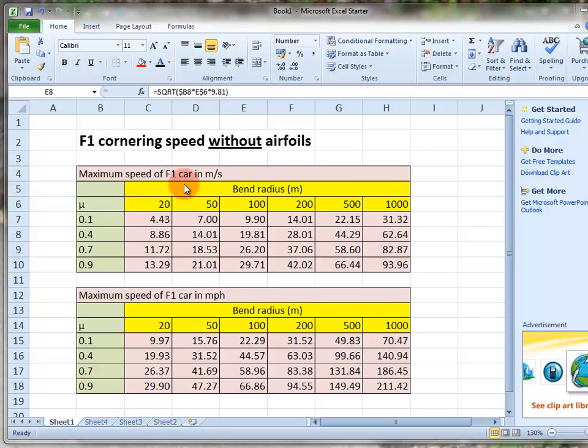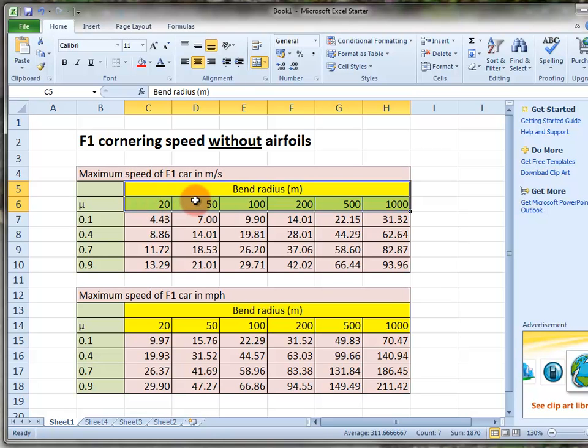In this video, we'll create this spreadsheet which shows the maximum speed of the car around the bend for different radiuses. Yellow is the bend radius, so we've got a 20m radius bend going up to a 1km radius bend.